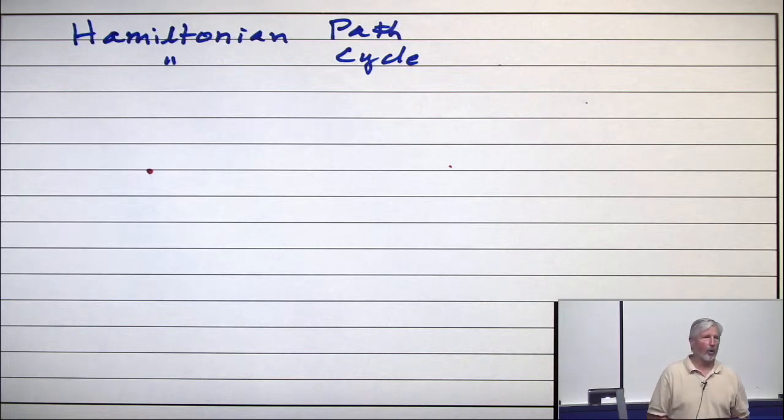Euler trails and Euler circuits are trivial. If you're given a graph determining whether or not it has an Euler trail or an Euler circuit is trivial.